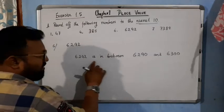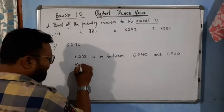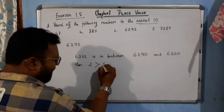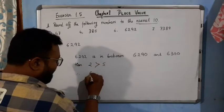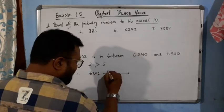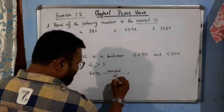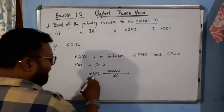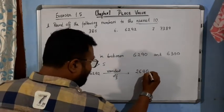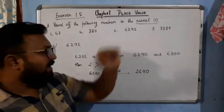92 falls in between 90 and 100. Here, 2 is less than 5. Therefore, 6292 is rounded off to the nearest ten: 6290.